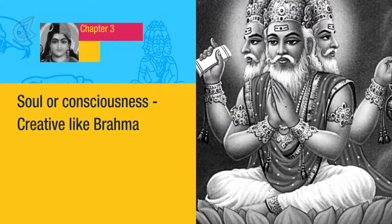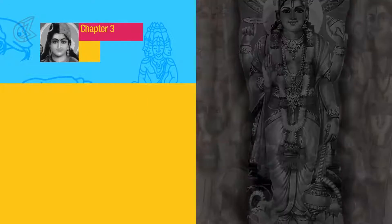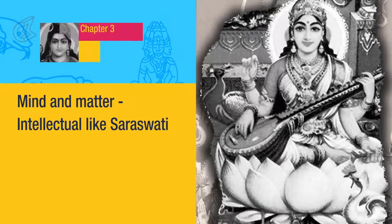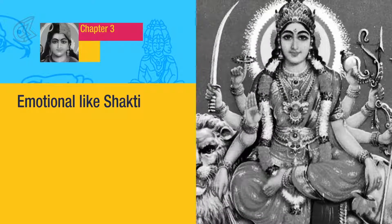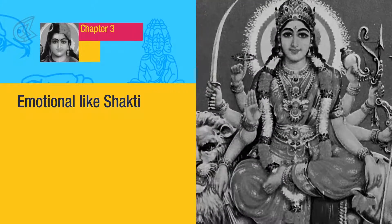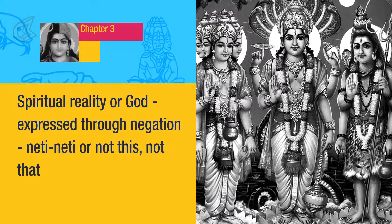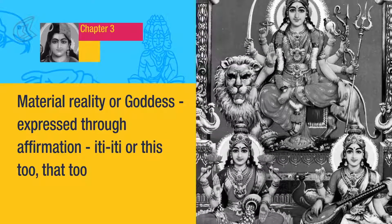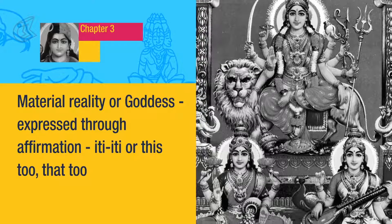Our soul or consciousness can be creative like Brahma, sustaining like Vishnu, or destructive like Shiva. Mind and matter can be intellectual like Saraswati, economic like Lakshmi, or emotional like Shakti. Spiritual reality or God is best expressed through negation — neti neti, or 'not this, not that.' Material reality or goddess is best expressed through affirmation — iti iti: 'this too, that too.'